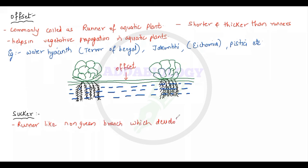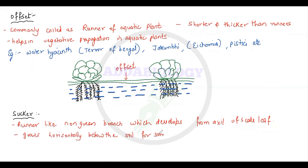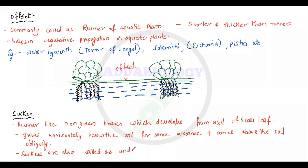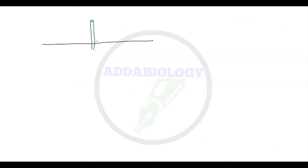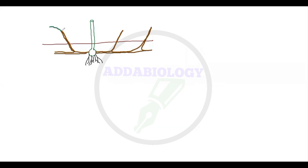The next sub-aerial modification is the sucker. Suckers are runner-like, non-green branches which develop from the axil of scaly leaves. They grow horizontally below the soil surface, but after traveling some distance they come up obliquely above the soil. Suckers are also called underground runners. Examples include banana, mint (pudina), and chrysanthemum. So we have three types of runners: normal runners, aquatic runners (offsets), and underground runners (suckers).